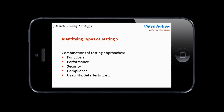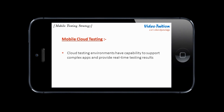To ensure a mobile application works on all devices, consider the different types of testing required, including functional, performance, security, beta and so on. In addition, mobile cloud testing environments are available for mobile testing. Mobile cloud provides a web-based mobile testing environment where applications can be deployed, tested and managed. Cloud testing environments have the capability to support complex applications and provide real-time testing results, which means defects can be analyzed while the tests are running.